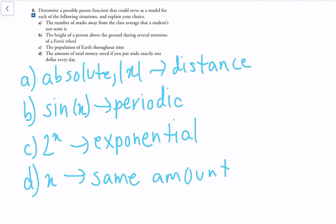For question 6, we determine a possible parent function as a model for each situation. A: The number of marks away from the class average — this is absolute value, since we're measuring distance from the average. B: Height during rotations of a Ferris wheel — this is sin(x), because it's periodic motion repeating continuously over time.